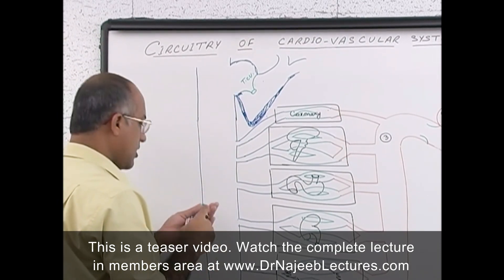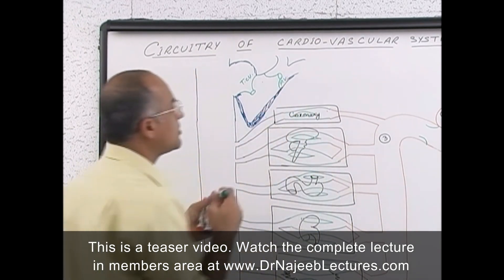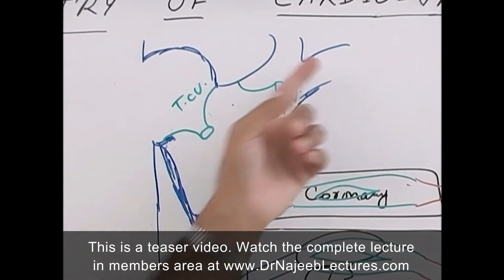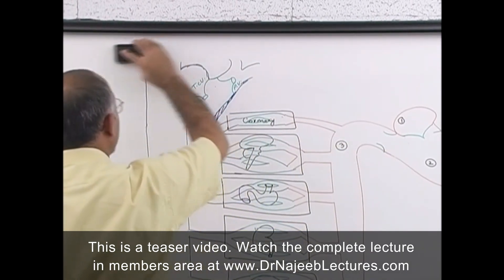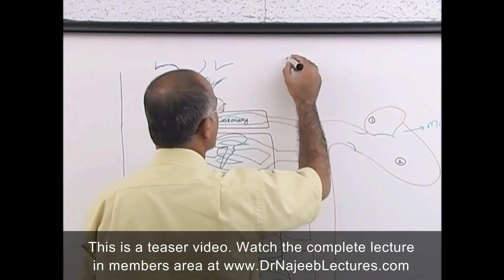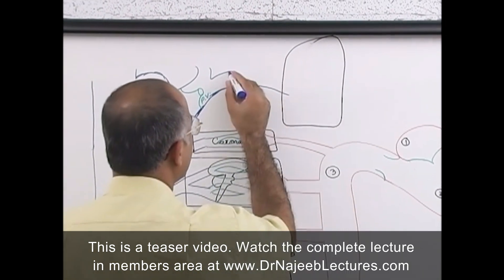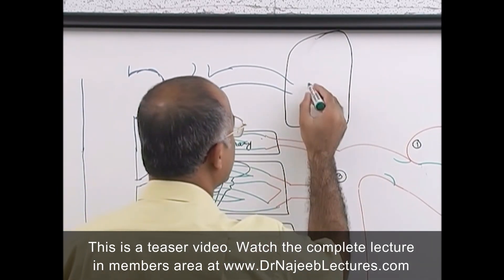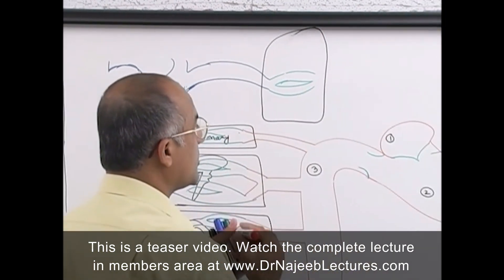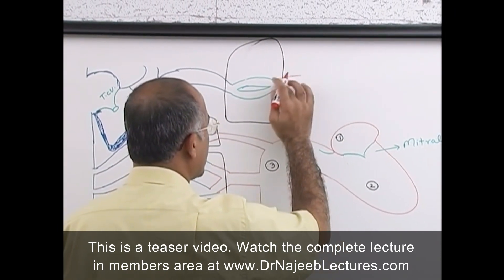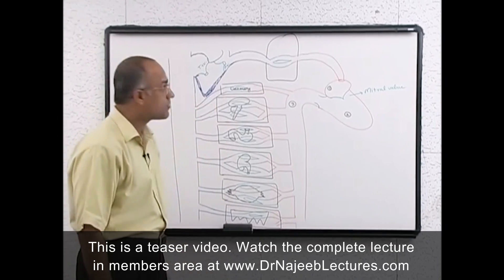Blood from the right ventricle is pumped into the pulmonary artery through the pulmonary valve. It then enters the pulmonary arterial tree and passes through pulmonary circulation. In the lungs, blood breaks up into pulmonary capillaries. From the pulmonary capillaries, blood is collected into pulmonary veins, and through the pulmonary veins it returns to the left atrium.